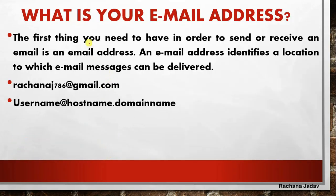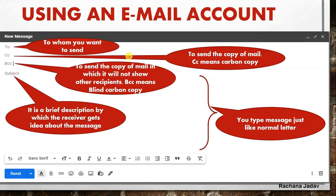Some popular email websites are Gmail, Yahoo, and Rediff Mail, and many more. You must know your email address properly. Now, using an email account - if you want to send a message, you go with the Compose option. If you don't find Compose, you will find a pencil-like icon. Compose means you want to create your own mail - you want to write a letter. In the Inbox you will see messages that have been sent to you by other people. 'To' means to whom you want to send the message - you must have the email address of that person.